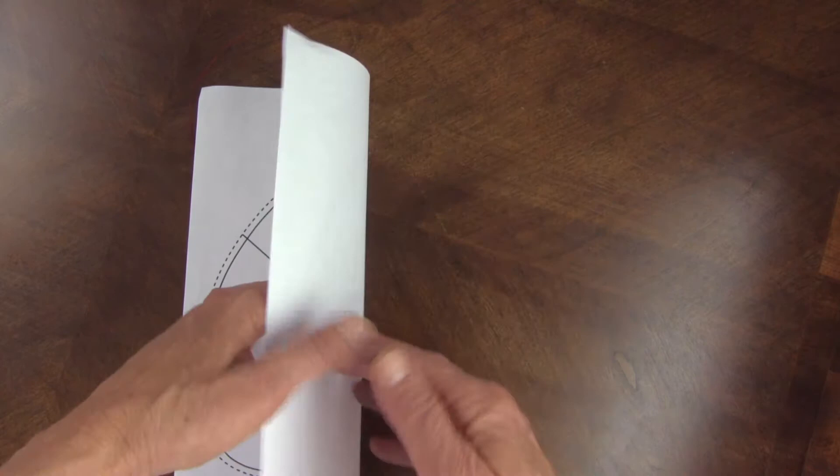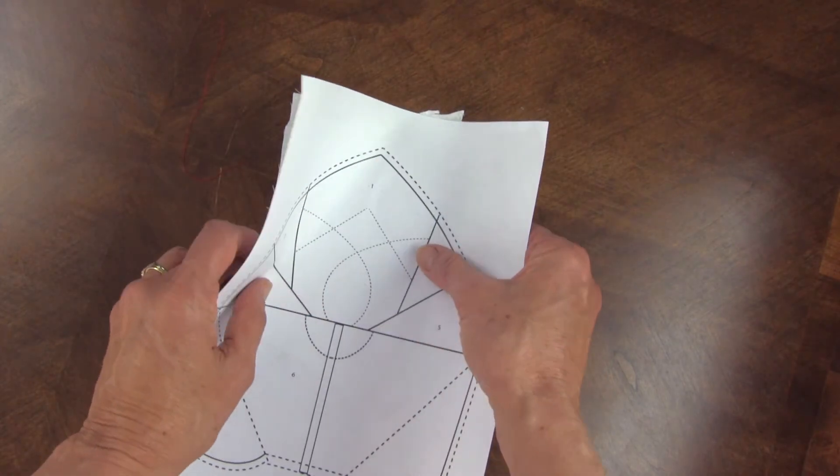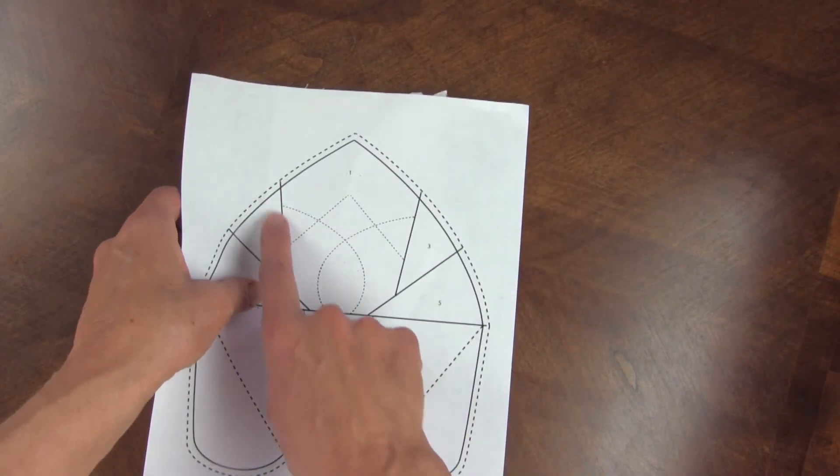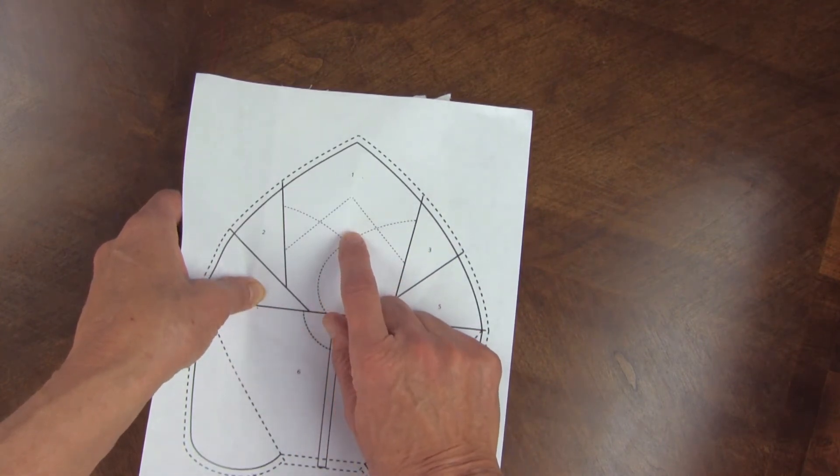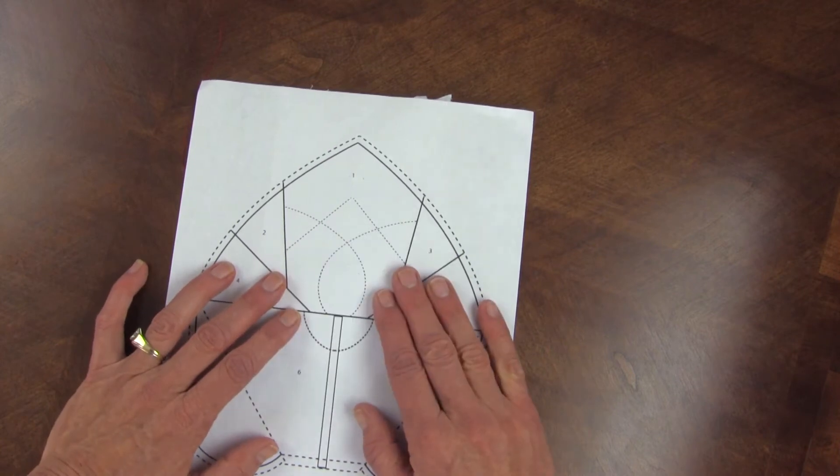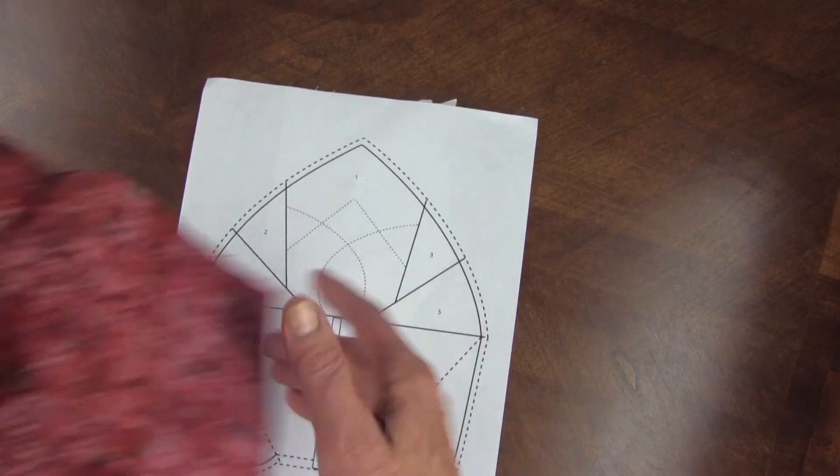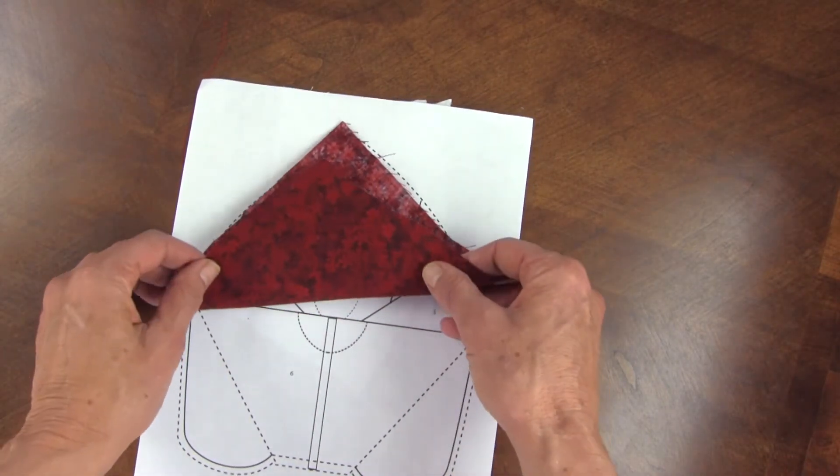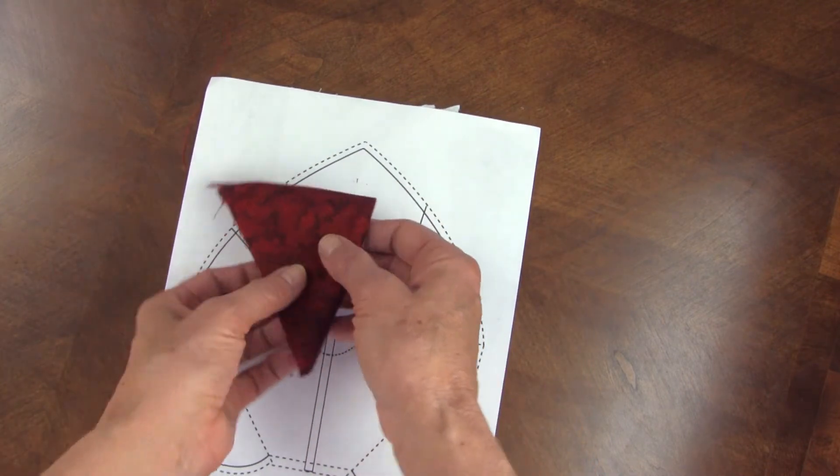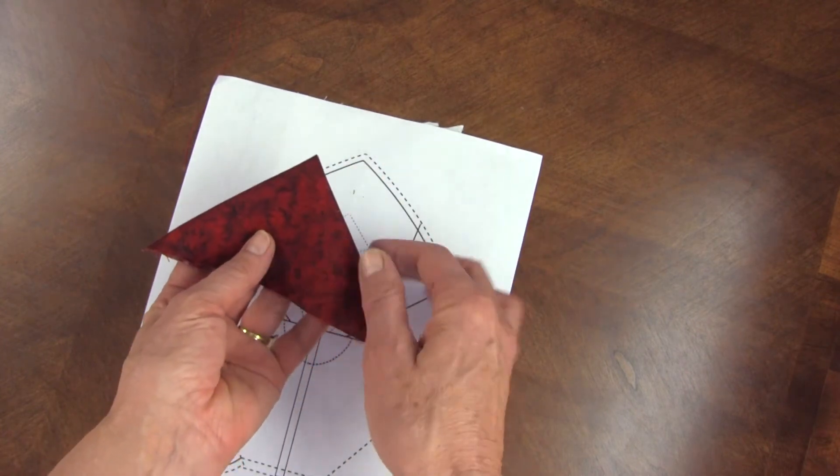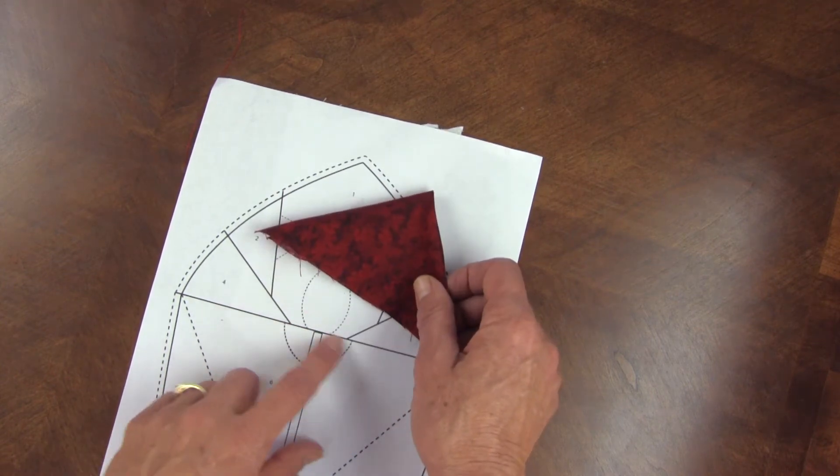So we're going to place area one so that it's right side away so that all of area one is actually covered beyond its border. And we'll pin it to secure it. Now, because we're adding dimension, we are going to add this center point, and the dimensions are in the pattern, but it's just a square that's folded diagonal, and then across, so that you're going to use this point where all the edges are not raw. This is the raw edge here, and that will be placed in this seam.